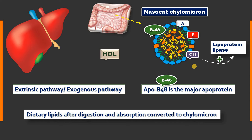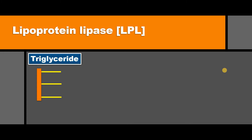Lipoprotein lipase is present in the walls of blood vessels but in inactive form. When the mature chylomicron acquires ApoC2 from HDL, it stimulates and activates lipoprotein lipase. Lipoprotein lipase plays a major role in chylomicron metabolism, and after studying this enzyme we will move on to the further fate of the chylomicron.